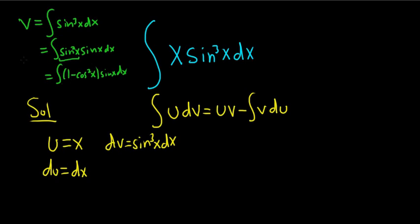Now we'll let w be cosine. So w is cosine, and dw is negative sine x dx. So negative dw is sine x dx. So sine x dx becomes a negative dw, and it's going to be negative 1 minus w squared dw.